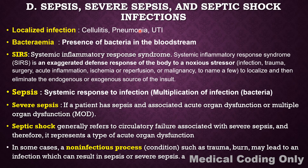Pneumonia is a lung infection caused by bacteria or virus. Urinary tract infection is a localized infection in the urinary tract. Cellulitis is a skin infection — a localized infection.